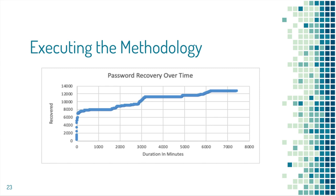This is real data showing our password recovery over time on a recent assessment. Within the first few hours we cracked the majority of passwords we were going to crack. The longer password recovery attempts yielded diminishing returns. Out of about 18,000 hashes, we cracked almost 14,000 — which was enough to demonstrate impact to the client. This was over about two weeks of letting the crackers run, with a lot of back-end analysis and rule tweaking to match what we were seeing.